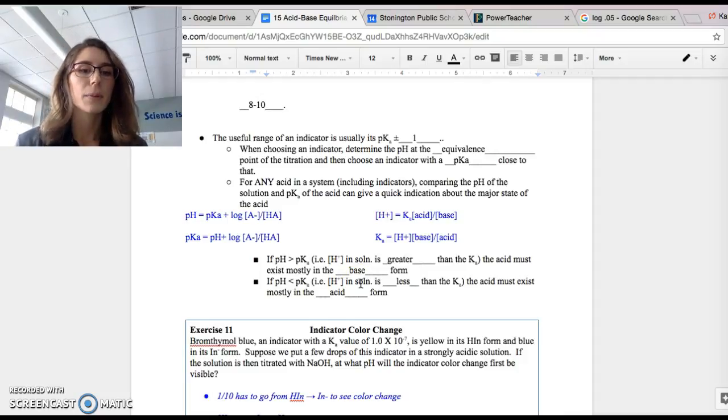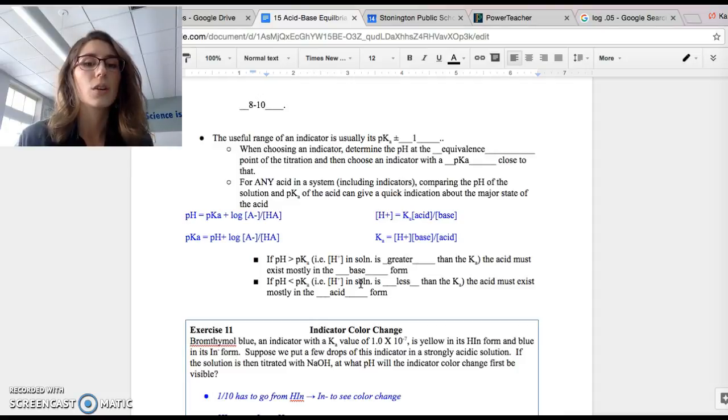And then for this last example problem, bromethymol blue, it's an indicator. It has a Ka value of 1 times 10 to the negative 7. So that's a pretty tiny Ka value. We're not going to consider it for affecting the pH, but it certainly is helpful in a titration. Its yellow form, it is yellow in its HIN form. So that's its undissociated form. It's blue in the IN minus or the conjugate base form. If we put a few drops of this indicator in acidic solution, if the solution is titrated with sodium hydroxide, at what pH will the color change first be visible?